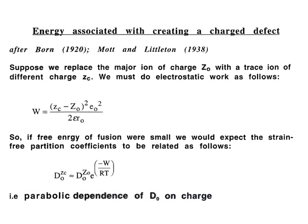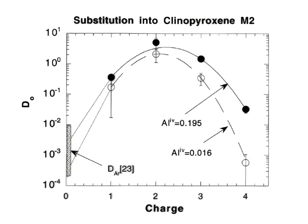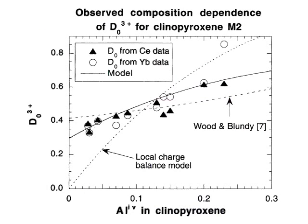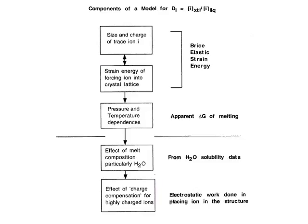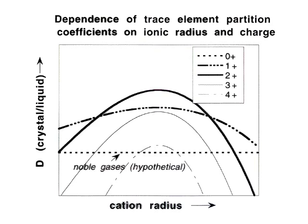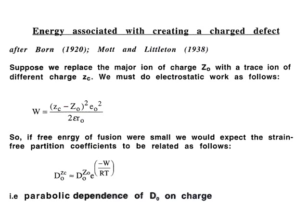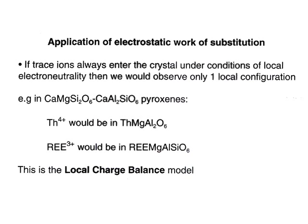This ion, being of much higher or lower charge than the major ion, will disturb the surrounding area and we will require doing electrostatic work to put it in. Fortunately, the form of the electrostatic work of placing this charge defect into the crystal structure has been known for a long time. Max Born in 1920 applied this approach to aqueous solutions, and Bristol physicist Martin Littleton used the same model for solids in 1938. The electrostatic work depends on the difference in charge squared — giving a parabolic dependence on the charge difference.